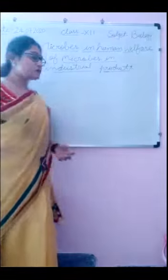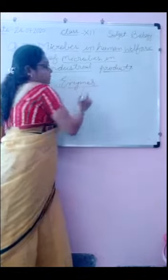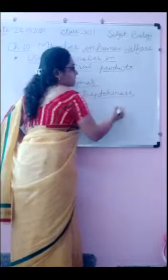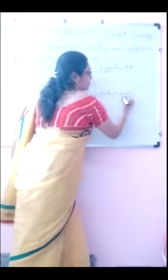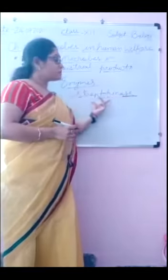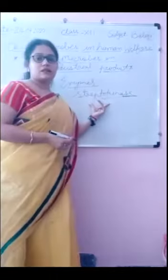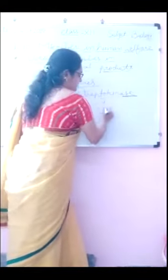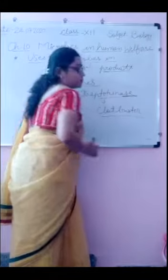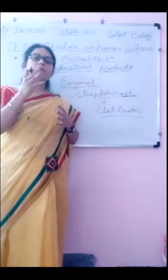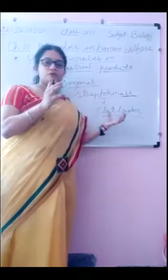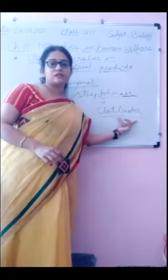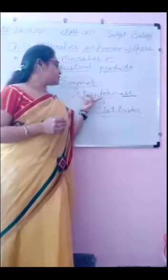Enzymes are also produced from microbes. Streptokinase is an enzyme obtained from Streptococcus bacteria. Streptokinase is used as a clot buster — meaning it is used for removing clots inside blood vessels.